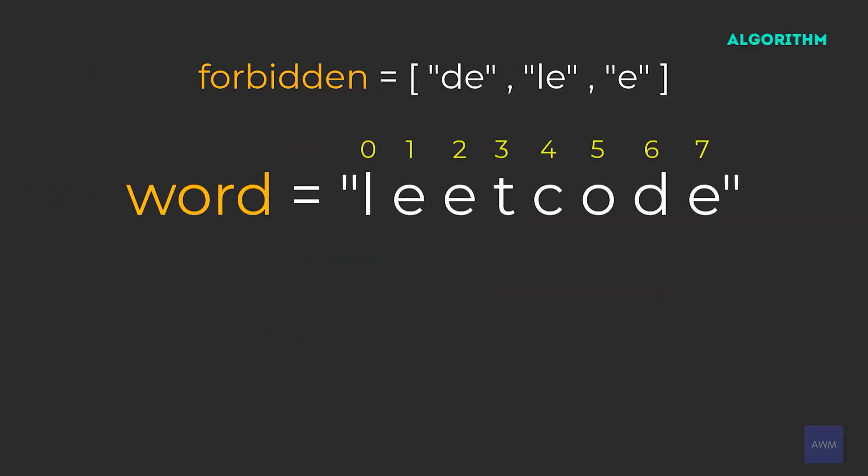To get around this pitfall, let's look at the optimized approach. Just like all sliding window algorithms, we need to initialize a left and right pointer. However, instead of initializing them to zero, they are going to be set to the last index in word, which is seven. We're doing this because we want to iterate backwards instead of forward. Our left and right pointer represent the bounds of a substring in word. We're also going to need a max length variable to keep track of the maximum valid substring we come across.